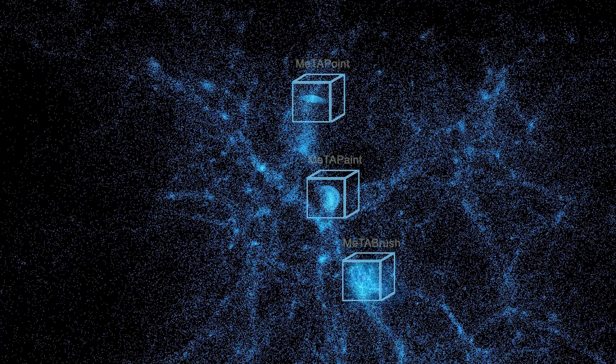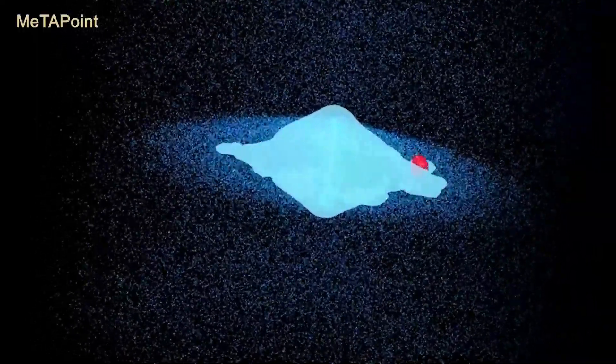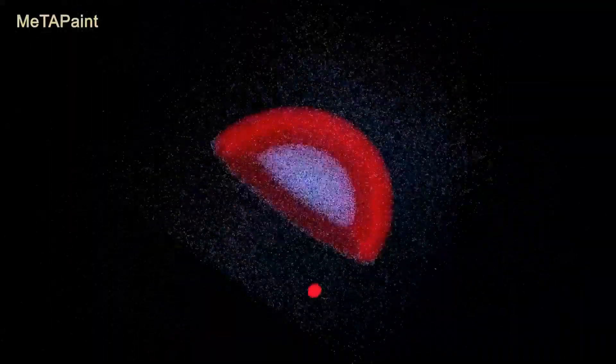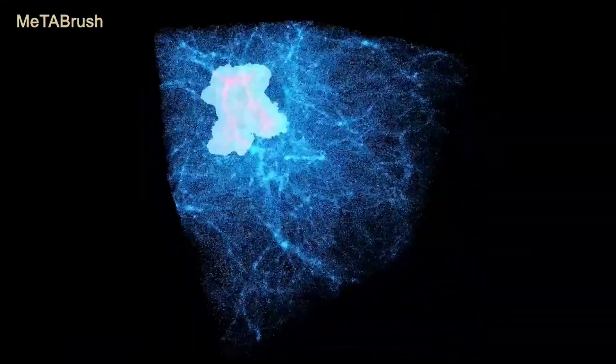We propose three novel spatial data selection techniques for particle data in virtual reality. They allow users to select the region of interest by pointing at the target point cloud cluster and dragging to adjust the boundary, painting on the geometric features even without a precise input, or brushing along the target point cloud filament.